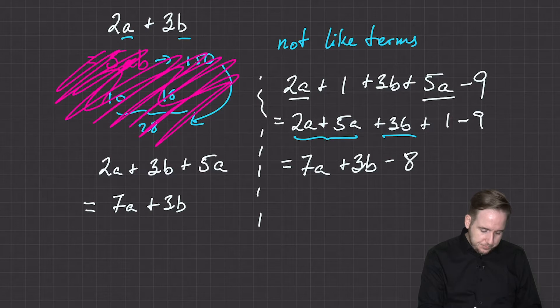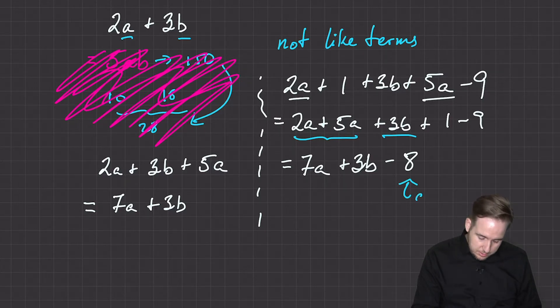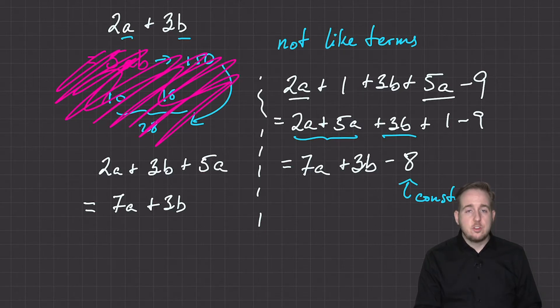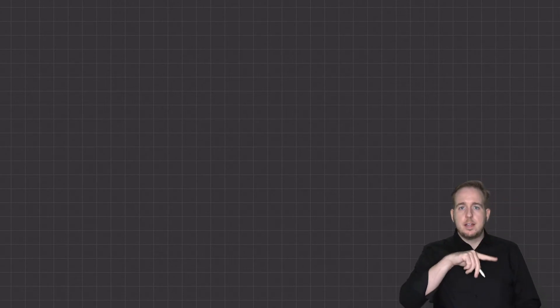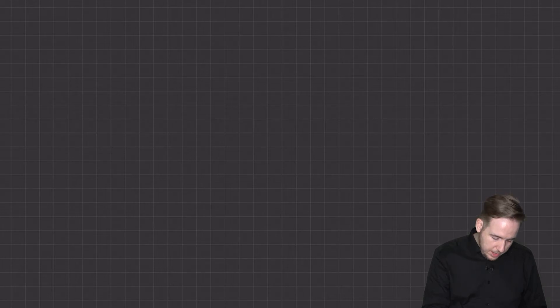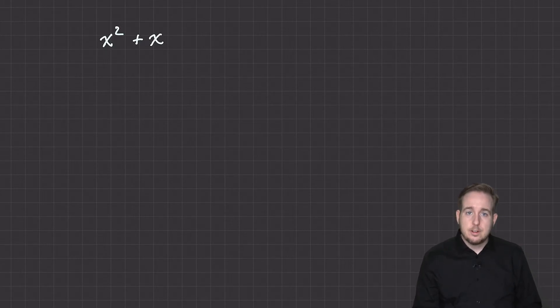The technical term for the numbers that are part of expressions that don't have variables to them is constants. Right? The number 8 is not a variable. It doesn't change. 8 always means 8 every day of the week. It's a constant. Now, what about something a little bit more challenging? Because we know from multiplying in the last video that I could have x times x, x squared. What do I do with x squared plus x? Spoiler, nothing.